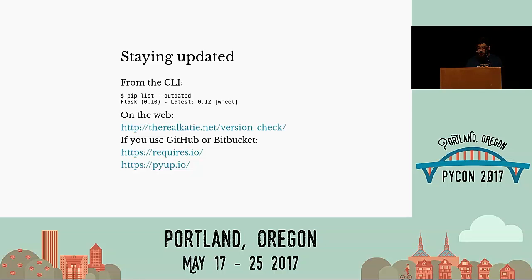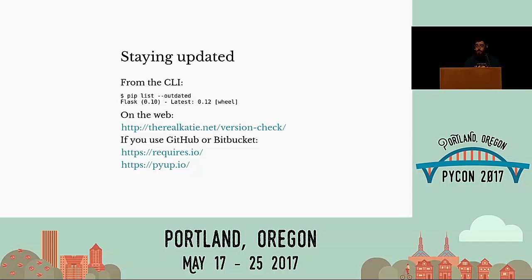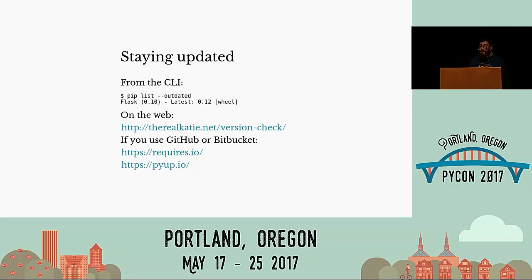Now that we have our dependencies managed properly, we want to stay on top of updates. Pip provides a way to list outdated packages in your local environment. For a quick web check, there's a tool called Version Check at reqlyd.net/version-check — you paste a requirements file and it tells you what needs updating. If you're using GitHub or Bitbucket, projects like requires.io and pyup.io monitor your dependencies and notify you of updates. Both are proprietary services but have free plans for open source projects.